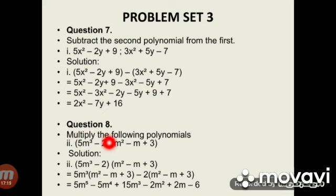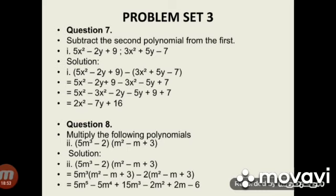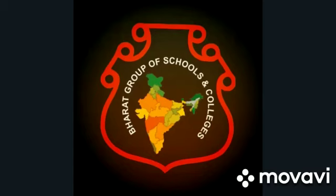Question 8: Multiply the following polynomials. Subdivision 2: (5m³ minus 2) into (m² minus m plus 3). Solution: 5m³ multiplied by (m² minus m plus 3) minus 2 multiplied by (m² minus m plus 3), which equals 5m raised to 5 minus 5m raised to 4 plus 15m³ minus 2m² plus 2m minus 6.